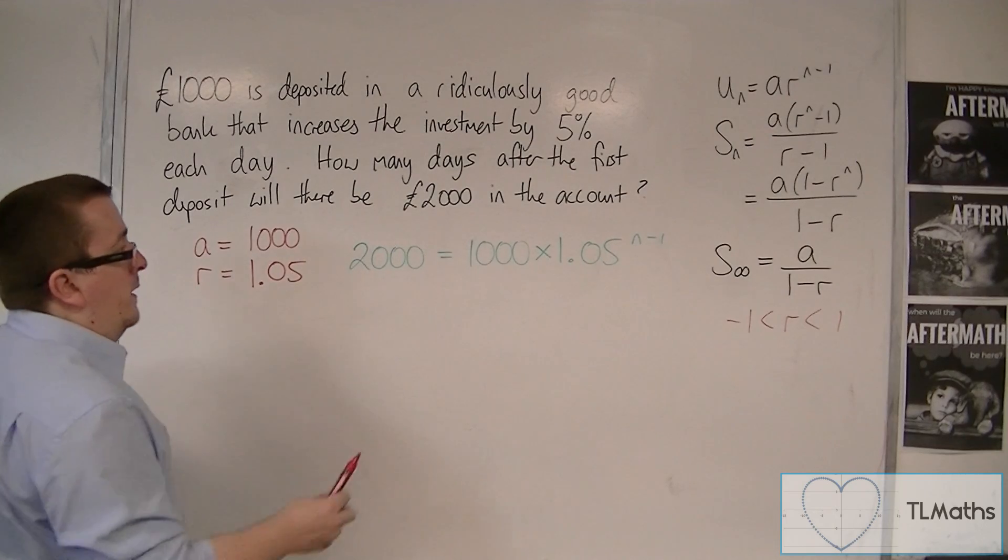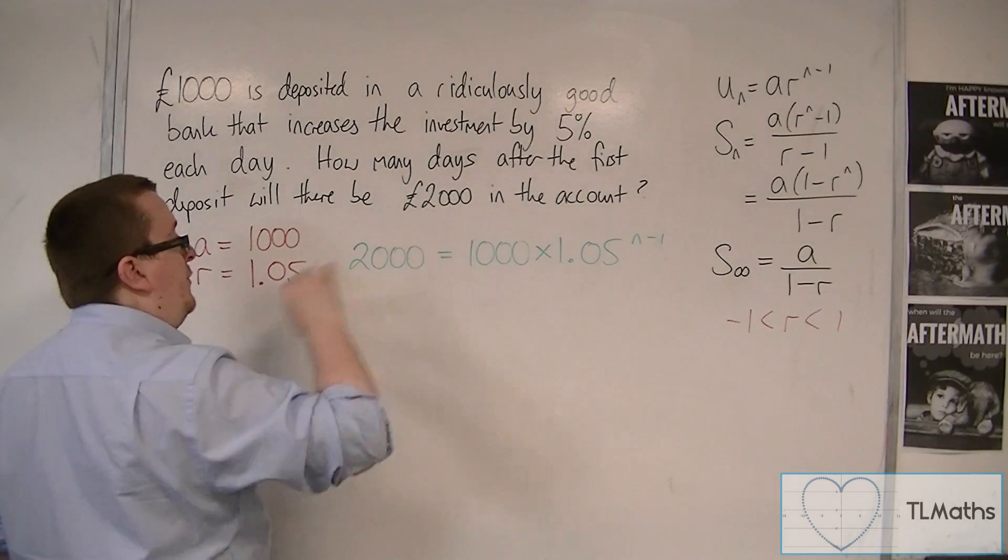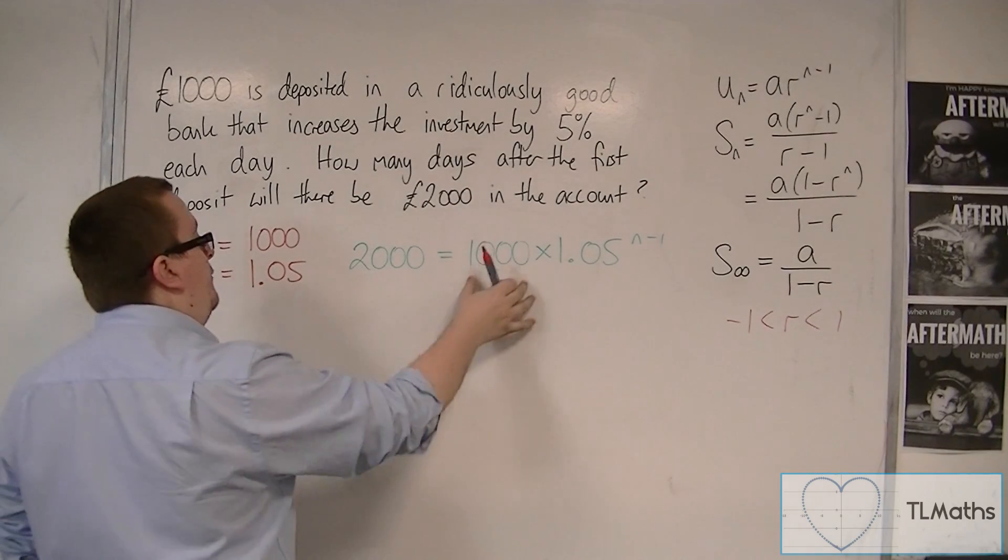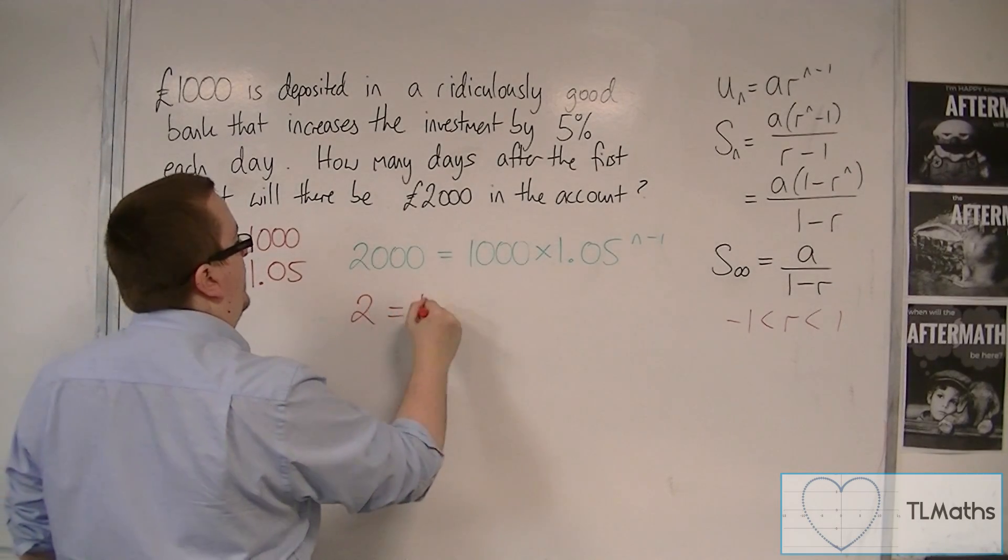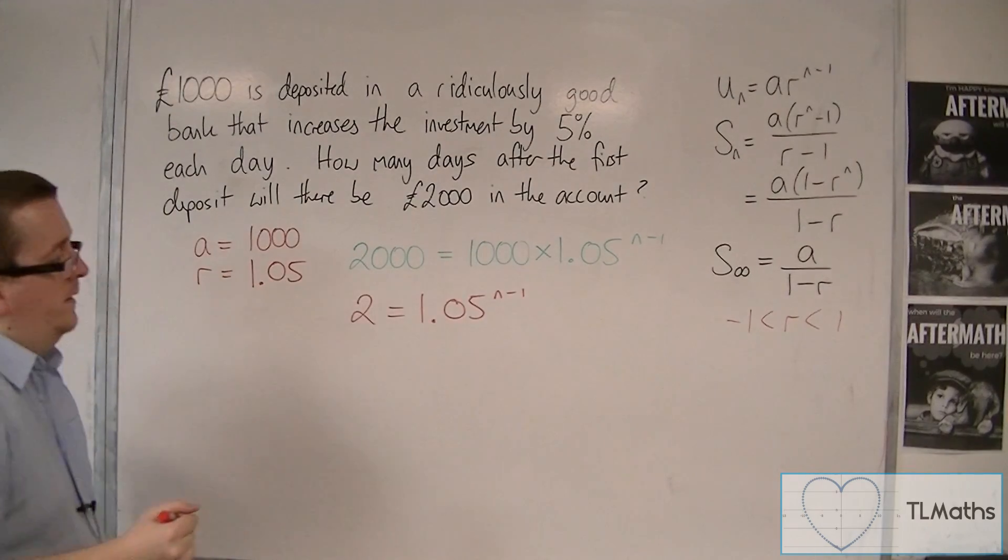Okay, so in order to solve that problem, we're going to divide by £1,000 first, so we've got 2 is equal to 1.05 to the N minus 1.